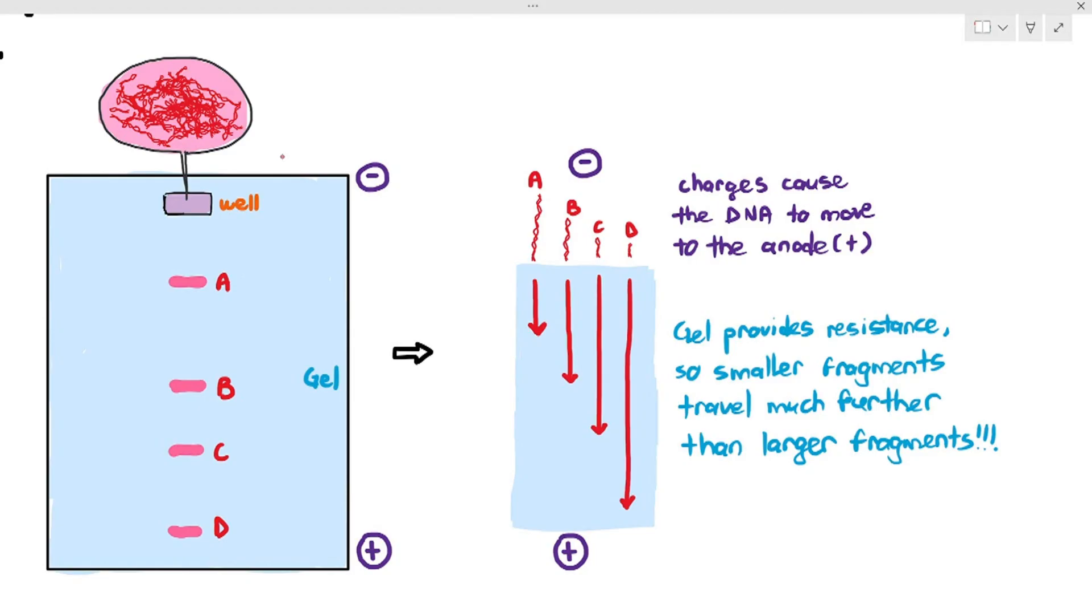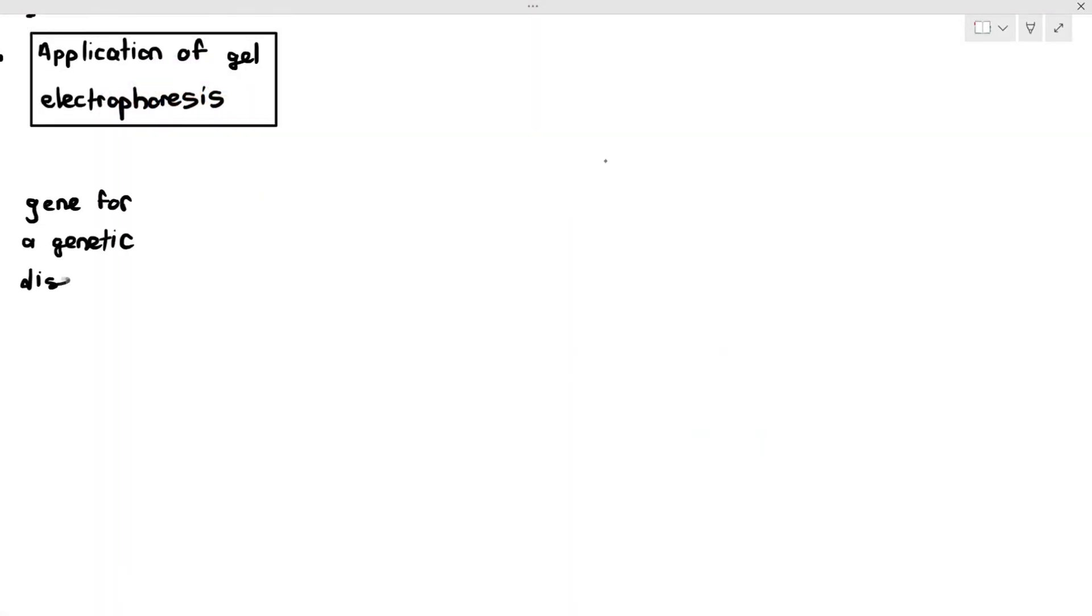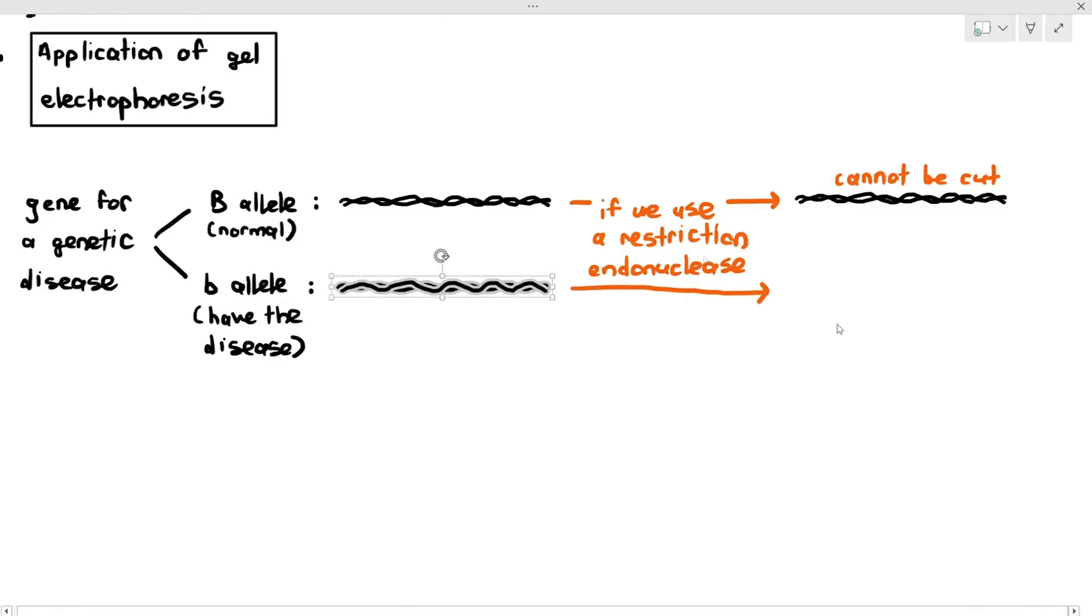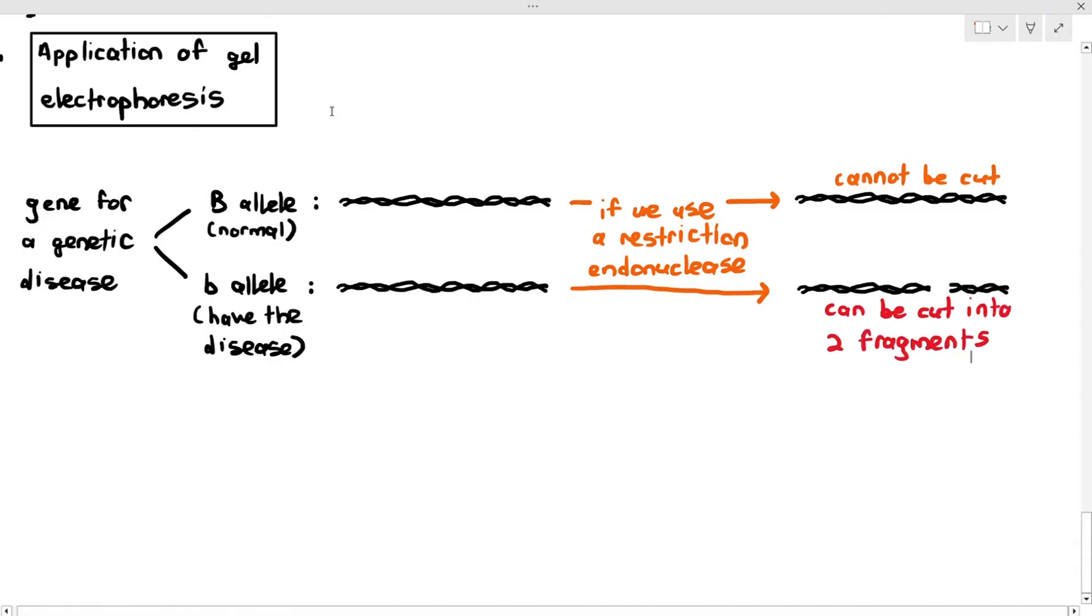As an example, let's see how we can use gel electrophoresis to screen or detect a genetic disease. Do not need to memorize this, but a gene for a genetic disease has the large B allele, which is normal, and the small B allele, which causes the disease. I'm going to draw out the DNA fragments. The large B allele has that length, the small B allele has that length. But interestingly, if we use a restriction enzyme to cut the large B allele, it cannot be cut. The reason is probably because there is no restriction site where the enzyme can cut the large B allele. But it so happens the small B allele, because the sequence is slightly different, can be cut using the restriction endonuclease, and it will be cut into two fragments.